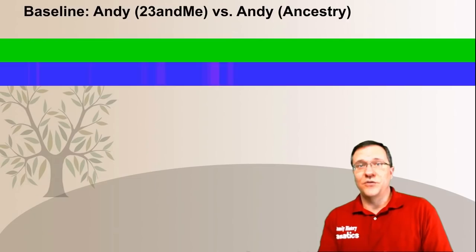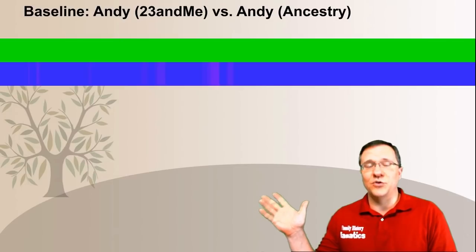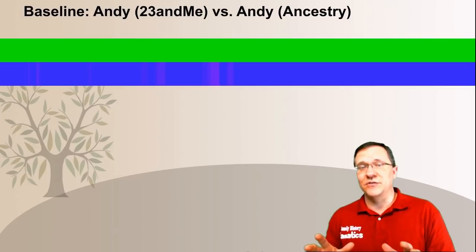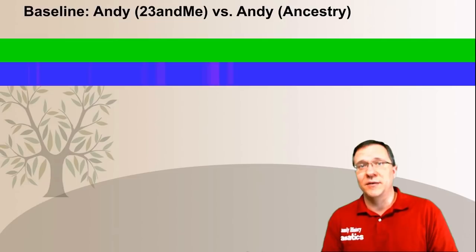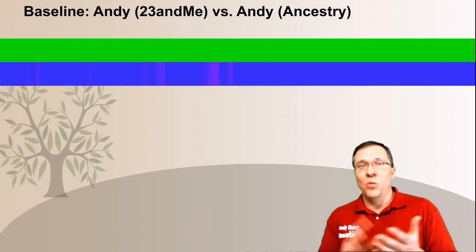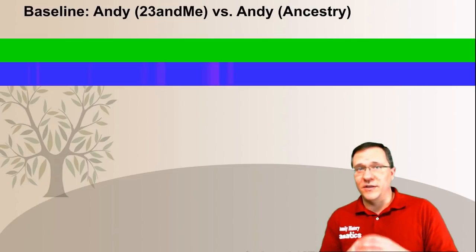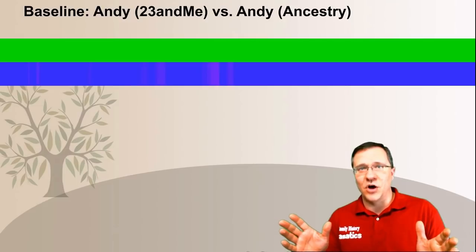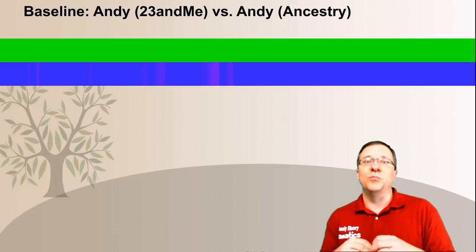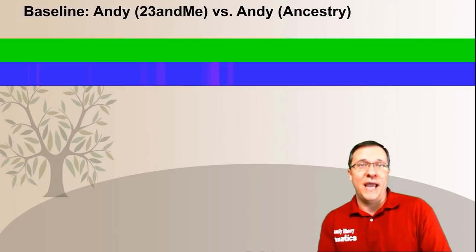Doing one-to-one match comparisons is interesting because we can actually see what the trisomy is going to look like with each one of these different analysis methods. Since only chromosome number 21 changed, that's the only one I'm going to look at. For my baseline, I'm comparing my 23andMe kit against my Ancestry kit — without the trisomy — so you can see that it's green all the way across, meaning a full match, and it's blue all the way across, which also indicates a match.